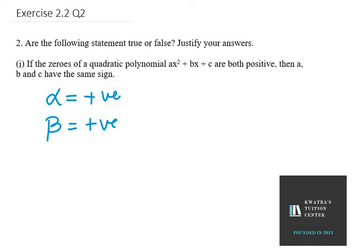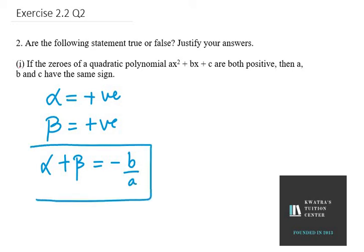Now we know from alpha plus beta, that is sum of the zeros, we have minus B over A. So alpha plus beta equals minus B over A. It shows that minus B over A is negative. This seems to be negative here, right, because we have negative sign here.